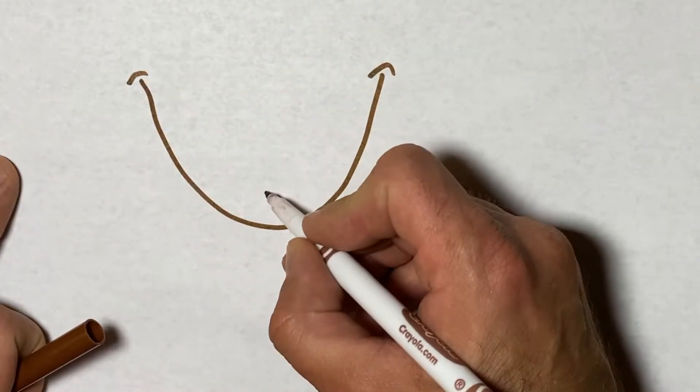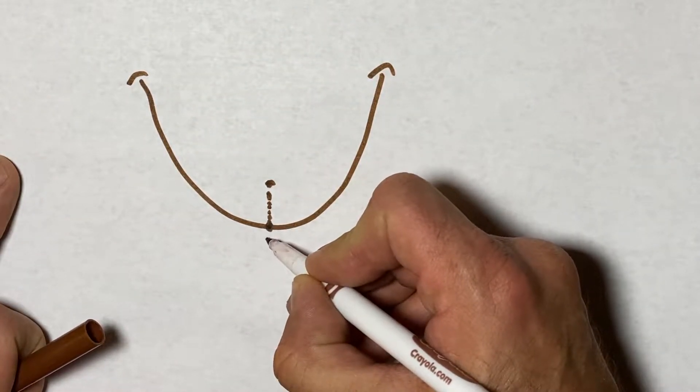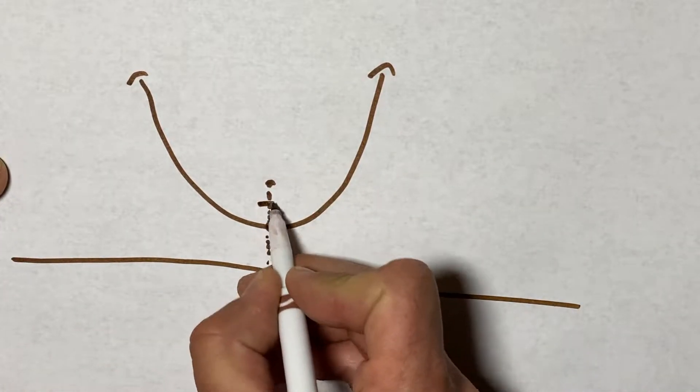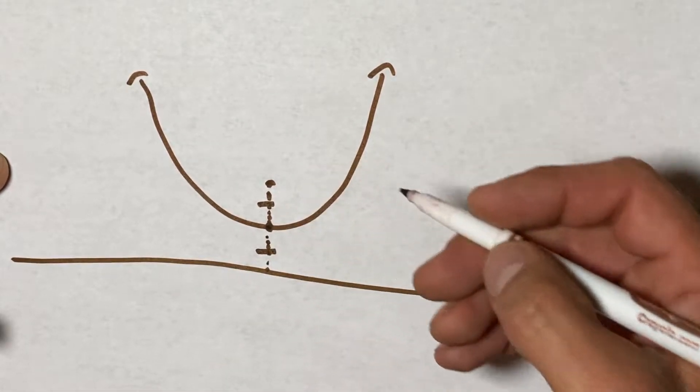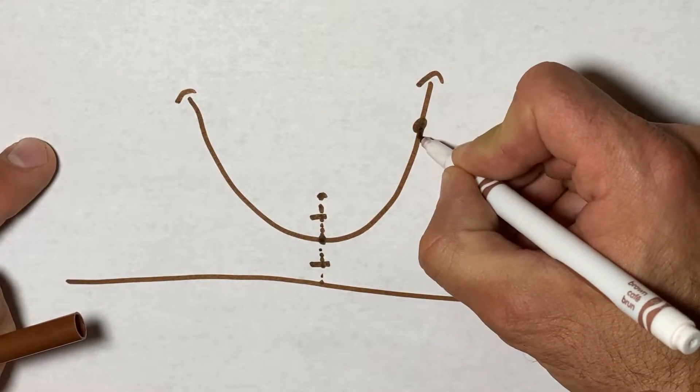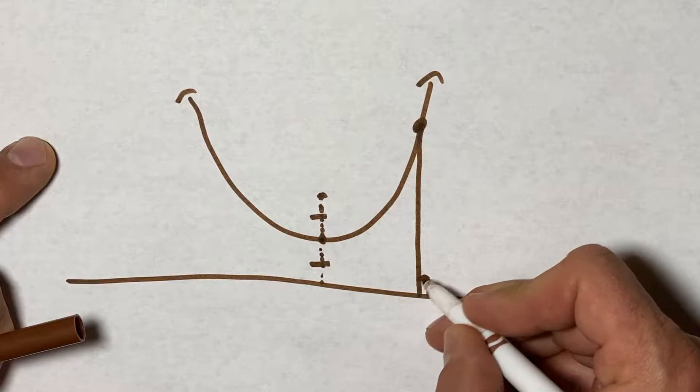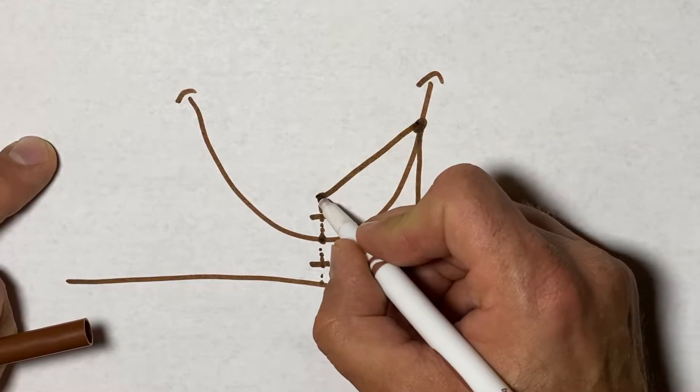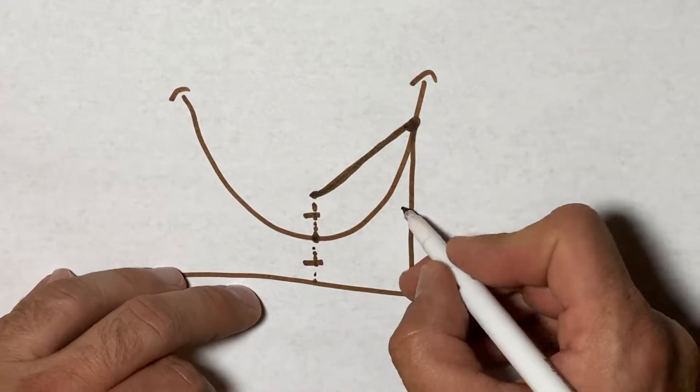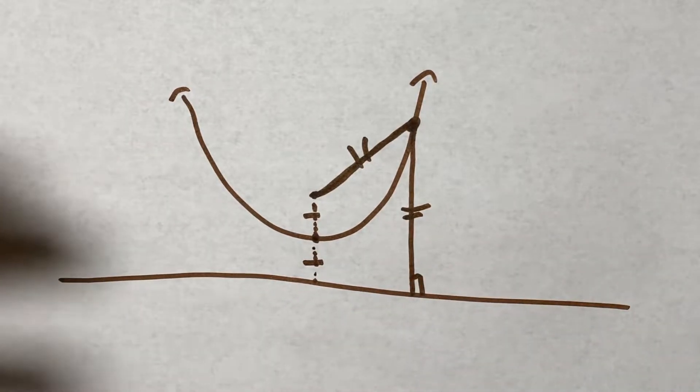When you have a parabola, you will have a focus point, and the same distance to the vertex is what we call the directrix line. This line and this line are going to be the same amount, and that holds true for anywhere on the parabola. If I take this spot, the length of this line that's perpendicular to the directrix is always the same as the line to the focus point.